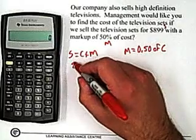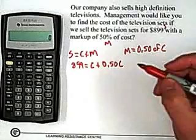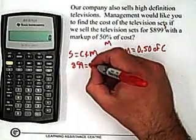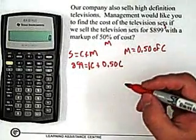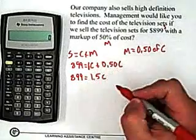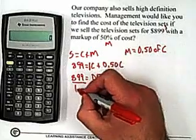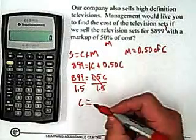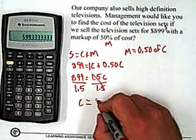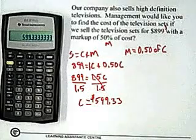We've got $899 equals cost plus 0.50 cost. When we have a letter by itself in algebra, we just put a 1 in front. So I'll put a 1 in front of the C and add it to the 0.5, which means $899 equals 1.5C. To solve for C, we divide both sides by 1.5. So $899 divided by 1.5 gives us a cost of $599.33.